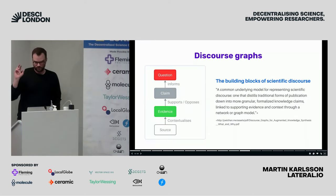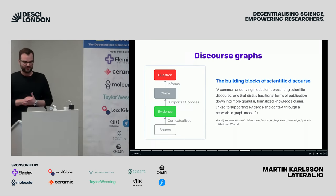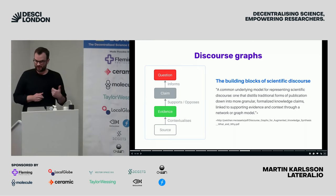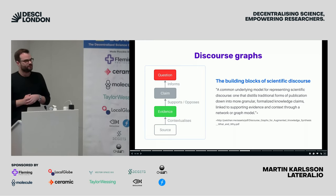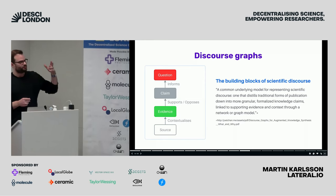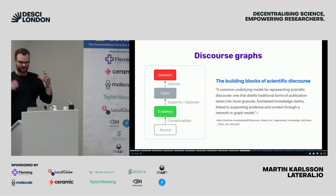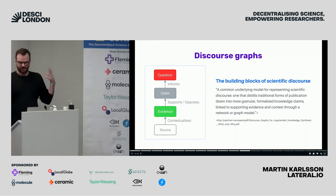A key concept that is very important for this graph is the information model, called discourse graphs. If you hang around the DeSci community long enough, you'll very quickly pick up on this concept. Discourse graphs are an information model developed by a professor called Joelle Chan with funding from Protocol Labs. The focus was really: how do you distill the process of synthesizing knowledge into the core building blocks that you could represent on a graph? Simply put, it means: what is the question? What are the claims you're making to inform that question? What is the evidence behind your claims? And what is the source of that evidence? This super simple information model is quite nice, because it gives you just enough structure to make collaboration more effective, but not too much to make it feel like you're railroaded into one way of working.